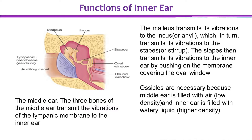The vibration passes to the incus, which is the second bone, also called the anvil — because it is shaped like an anvil. And then to the stapes, which is the third bone, also called the stirrup.